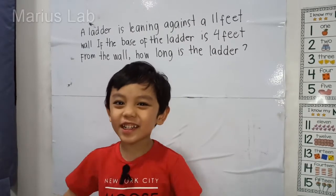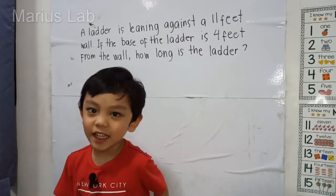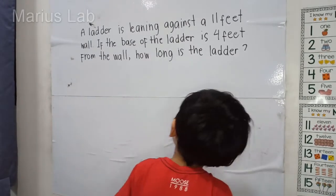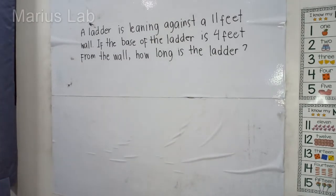Hi, Marius. Can you try this out now? Yes. A ladder is leaning against an 11-foot wall. If the base of the ladder is 4 feet from the wall, how long is the ladder?